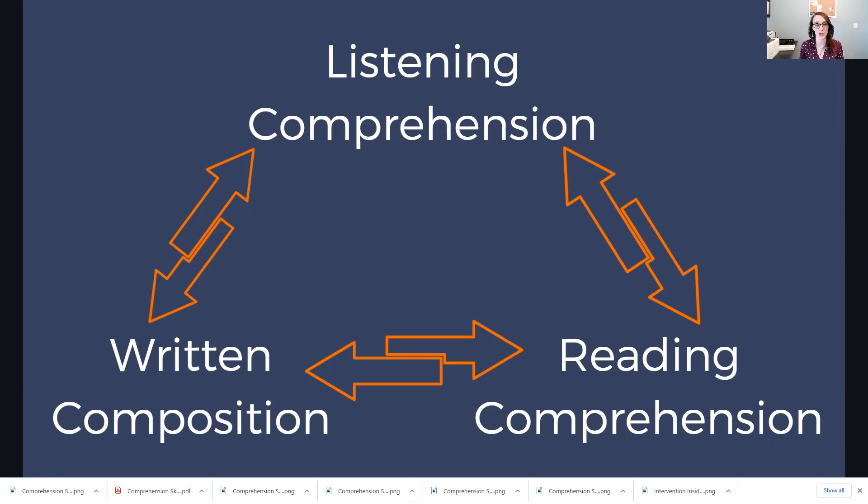They're going to need explicit instruction in decoding, which we talk all about all the time. But they're also going to need instruction in developing comprehension skills. But here's the thing, one of the most important things we need to recognize is that we have a limited amount of time with our students, and they have a limited capacity for all of the different strategies and skills that we're trying to teach. When we can create a framework that's going to allow us to hit multiple targets just teaching one strategy, that's going to be huge.